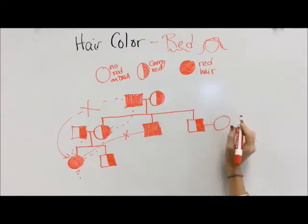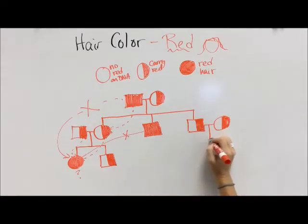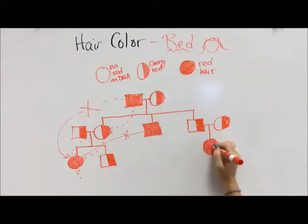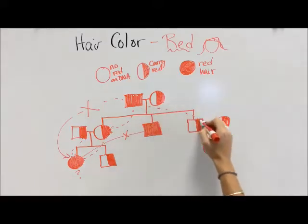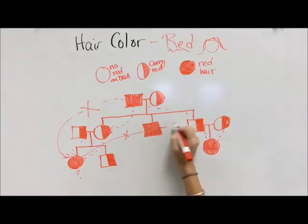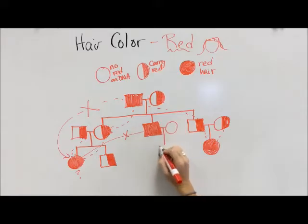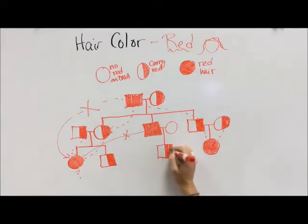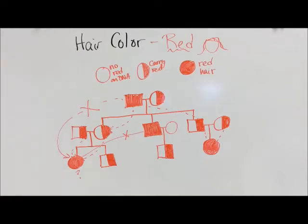The youngest son has a daughter who also has red hair — he's a carrier and the woman he has a child with is also a carrier, so they pass it on to their child. The middle son, who has red hair, has a daughter who does not have red hair but carries it, so because her dad and grandpa had red hair she could pass it on if she finds someone with red hair to have a child with.